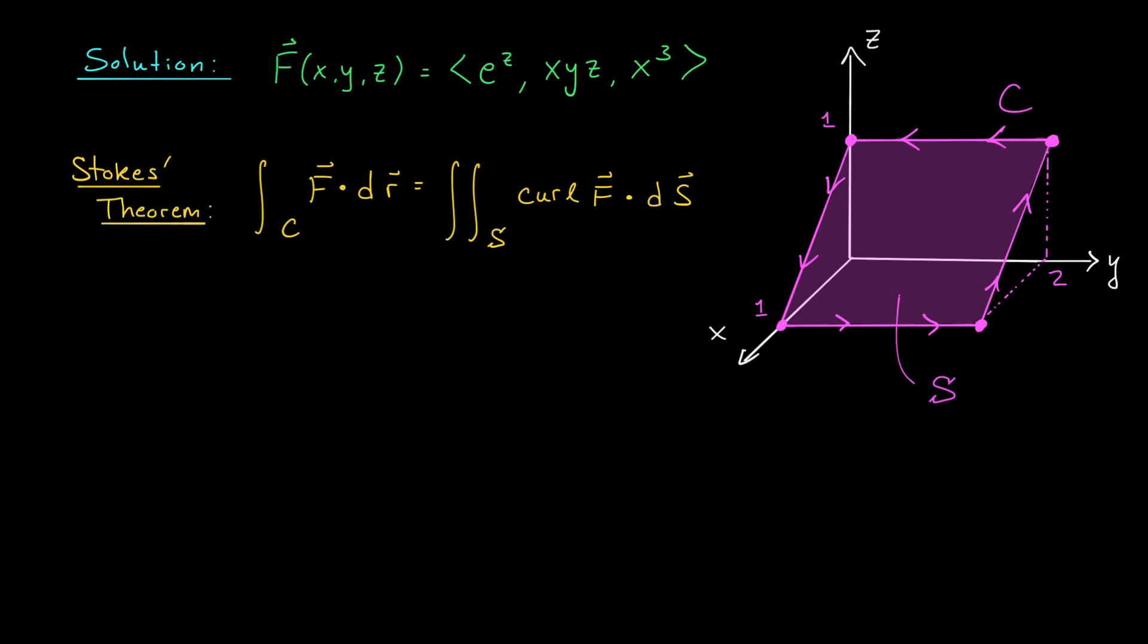We have our vector field F, and we're going to apply Stokes' theorem to convert this line integral into a surface integral. If we're going to be computing a surface integral, we should probably know the function that we're going to be integrating. So let's start by computing the curl of F. The curl of F is given by the determinant of i, j, k. In the second row, we have partial by partial x, partial by partial y, partial by partial z, and then finally our component functions,